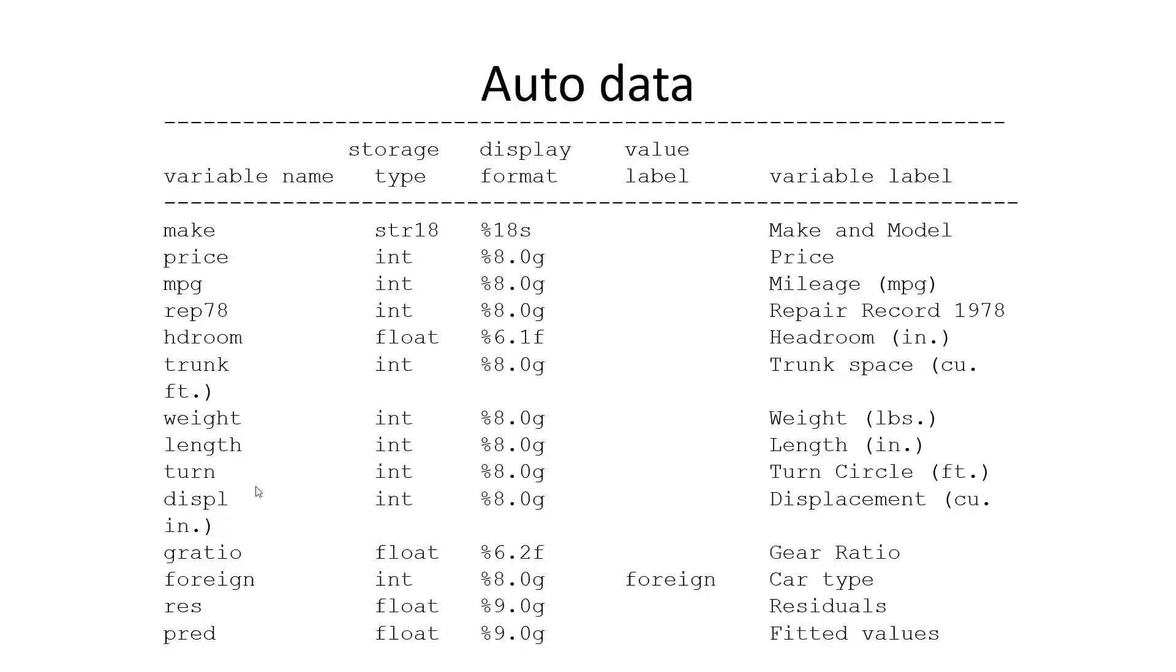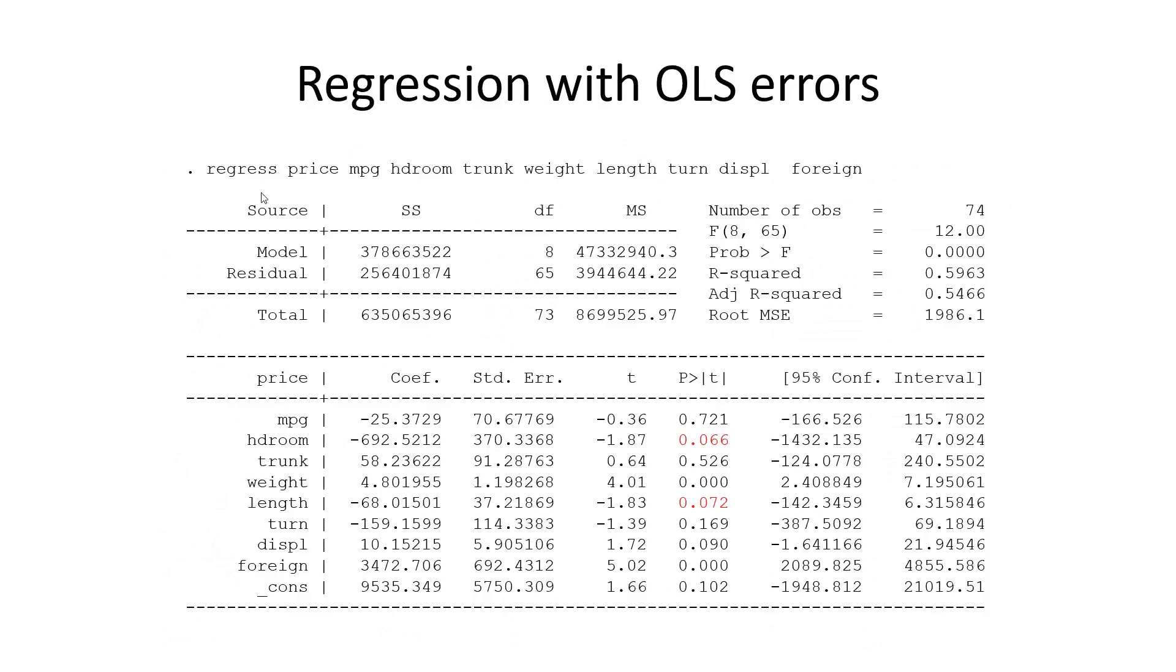Well, we have seen some variables of that: price, whether or not it's foreign, weight, length, and some other variables. So I'm just running a regression on the price of the car on several X variables here, including foreign.